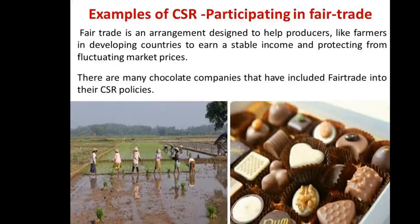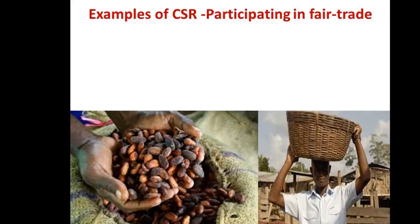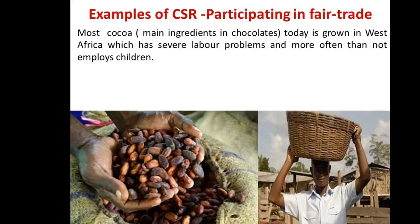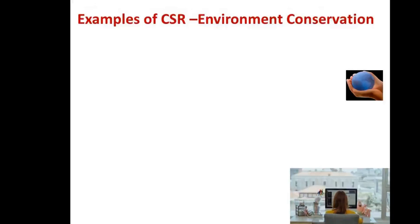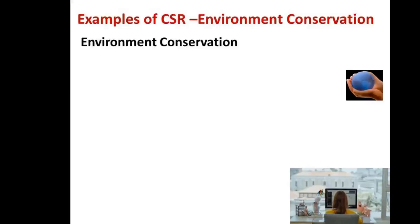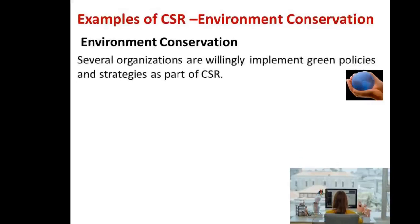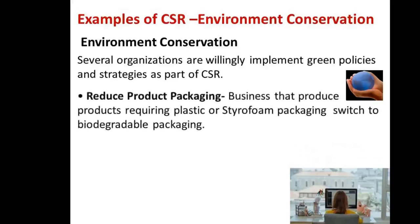The next type is participating in fair trade. Fair trade is an arrangement to help producers, especially farmers in developing countries, to get a stable income and protect them from fluctuating market prices. Several chocolate companies are doing this. Most of the cocoa for chocolate is grown in West Africa where laborers are in shortage. To overcome this, the World Cocoa Foundation along with the Fair Trade Foundation works to ensure things are done properly, the interests of farmers are protected, and no children are employed.